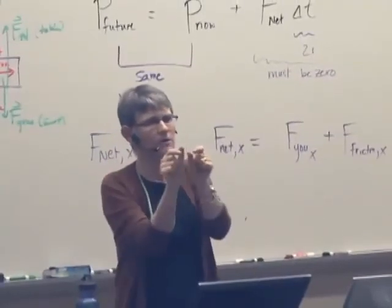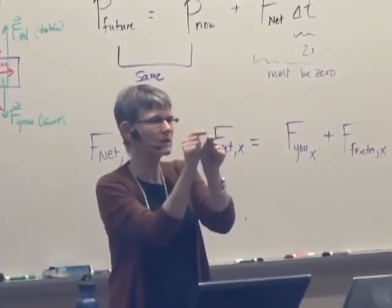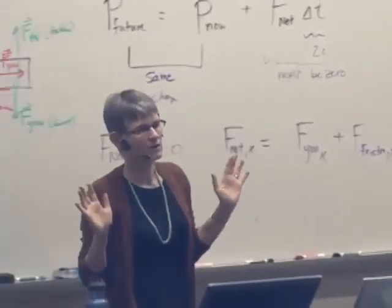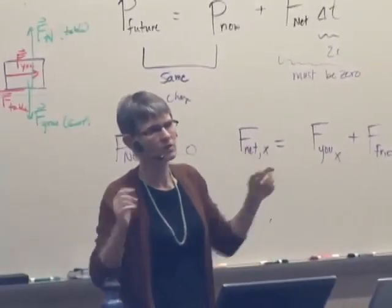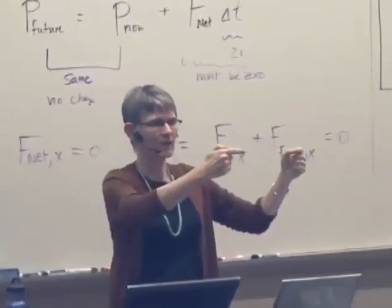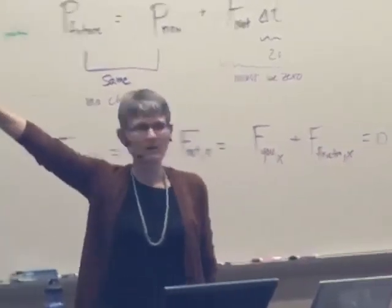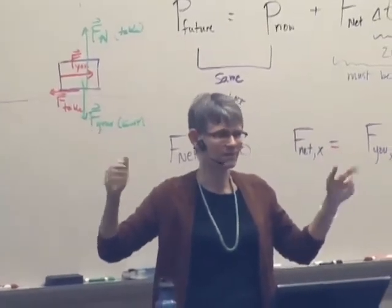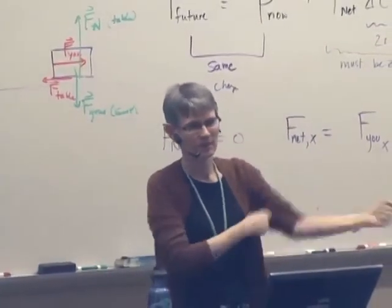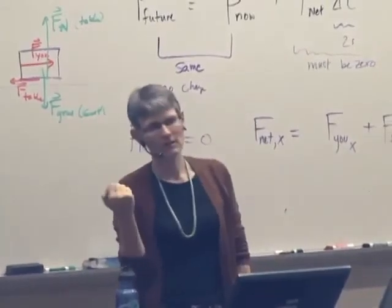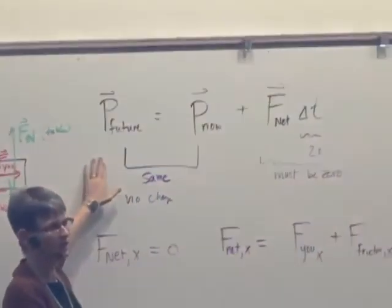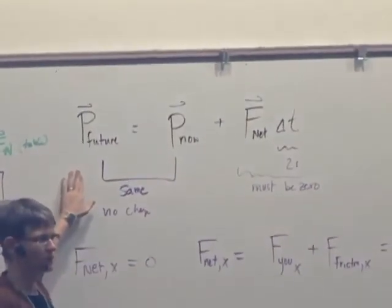during those short periods when it's speeding up, getting to constant speed, and when it's slowing down, going back to zero speed, the net force was not zero. But during the time when it's moving at constant speed, and by implication, the question tells you that this is the period we're considering, those forces had to be equal and opposite. And that's what it means to reason from a principle.